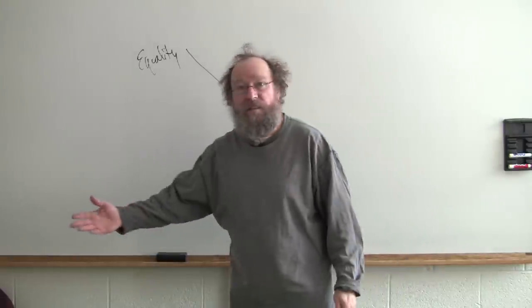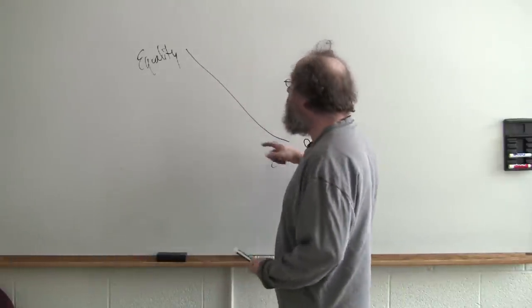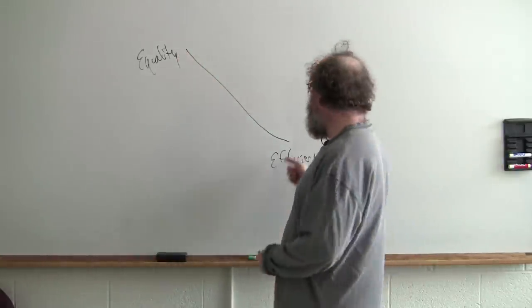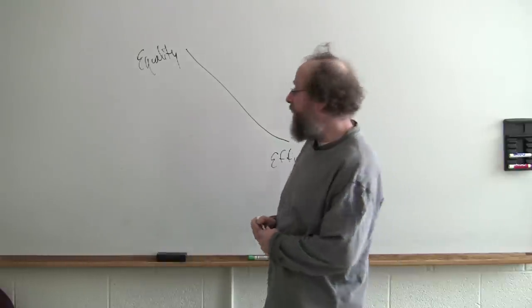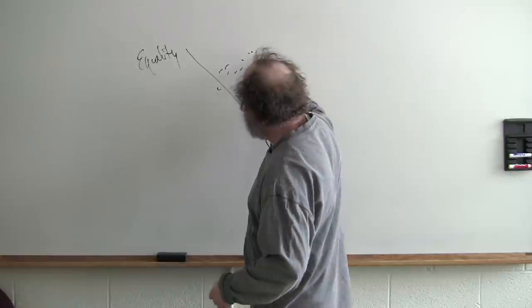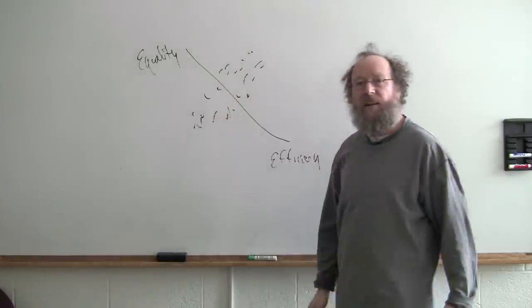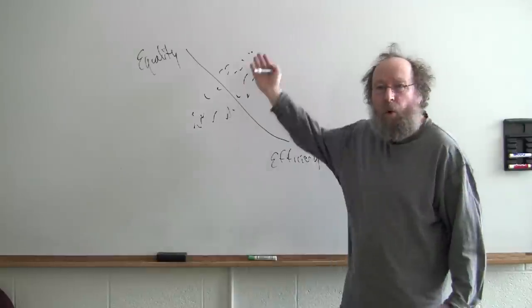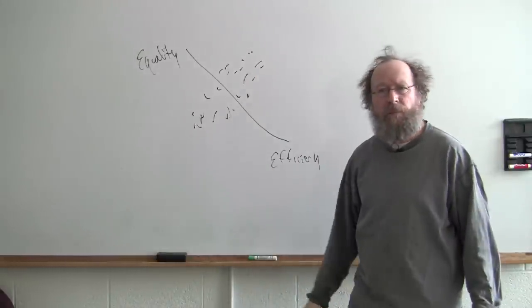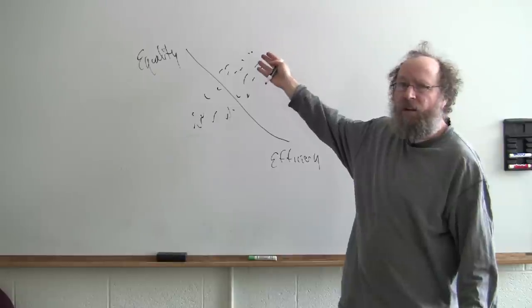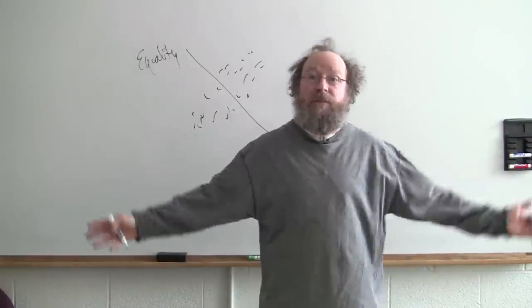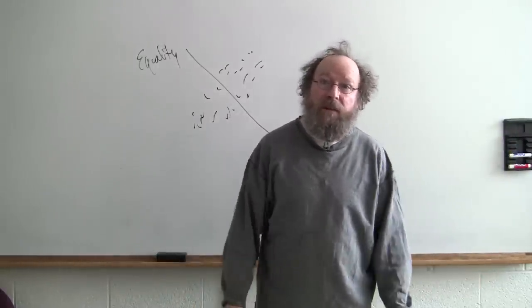If you look across states in the United States, you don't get a downward slope. Up here with high equality, you have Vermont. Down here with low equality, you have Mississippi. And you know what it looks like? It looks a little bit like this. The 50 states. More equality is associated with faster growth, more efficiency, higher income. The wealthiest, most productive parts of the country are the blue states, New England and the Pacific Coast and the upper Midwest and New York.